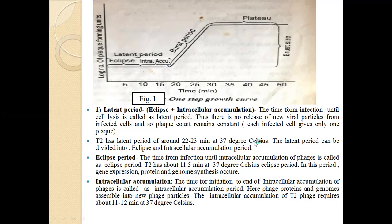The eclipse period is the time from infection until the intracellular accumulation of phage. T2 has an eclipse of about 11.5 minutes at 37°C. During this eclipse period, gene expression, protein synthesis, and genome synthesis occur.